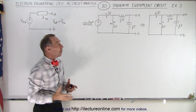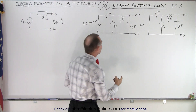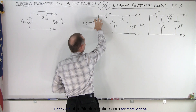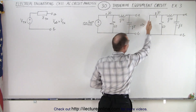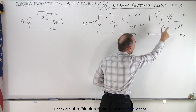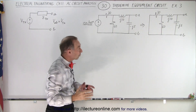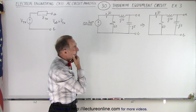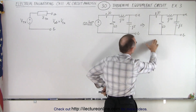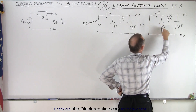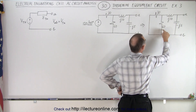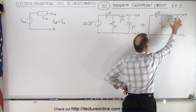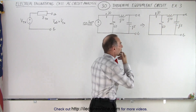The first thing we want to do is find the Thevenin impedance. To do that, we take the voltage source and replace it by a short circuit, and now we find the impedance across the terminals A and B. Notice that we have two resistors in parallel, connected in series to the inductor, and then that combination in parallel to the capacitor.